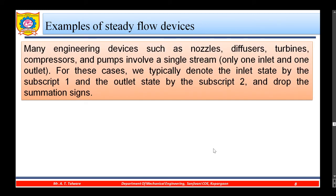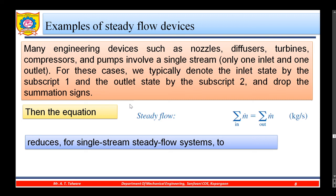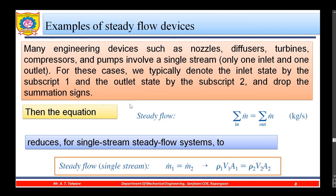Many engineering devices such as nozzles, diffusers, turbines, compressors, and pumps involve a single stream — one inlet and one outlet. For these cases, the inlet state is denoted by subscript 1 and the outlet by subscript 2, and the summation sign is dropped. The steady flow equation reduces to m_dot_1 equals m_dot_2, which in terms of density and velocity gives: rho_1 × V1 × A1 equals rho_2 × V2 × A2.